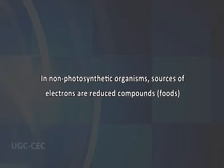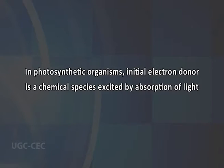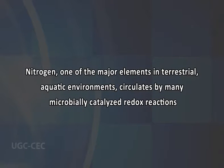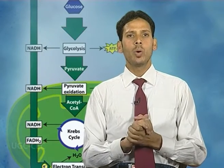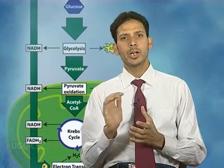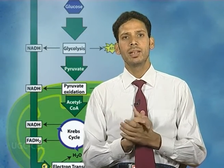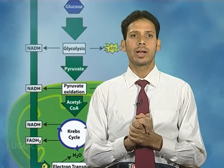In non-photosynthetic organisms, the source of electrons are reduced compounds. In photosynthetic organisms, the initial electron donor is a chemical species excited by the absorption of light. Nitrogen, one of the major elements in terrestrial and aquatic environments, circulates through many microbially catalyzed redox reactions. In fact, the only non-redox process in the entire nitrogen cycle is ammonia integration with and liberation from nitrogen-containing organic matter.